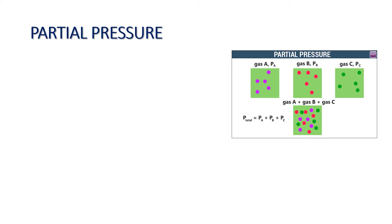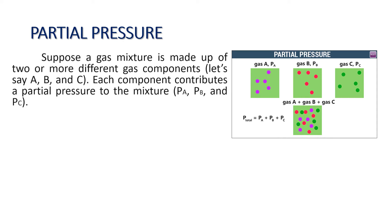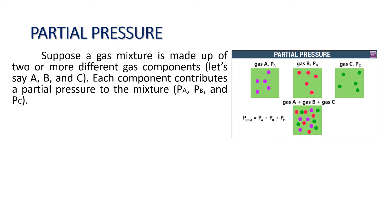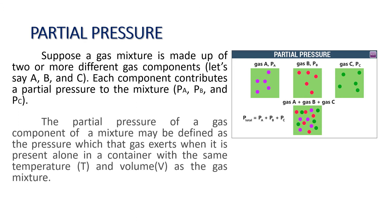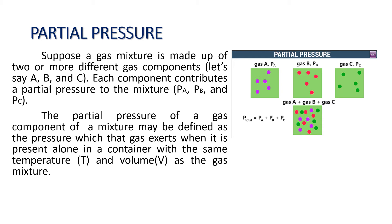The pressure of a gas is caused by collisions of the molecules with the walls of the container. When we say partial pressure, suppose a gas mixture is made up of two or more different gas components — let's say gases A, B, and C — each component contributes a partial pressure to the mixture: Pa, Pb, and Pc. So the partial pressure of a gas component may be defined as the pressure which that gas exerts when it is present alone in a container with the same temperature and volume as the gas mixture. The pressure that each gas exerts individually is the same as its partial pressure when they are all combined.